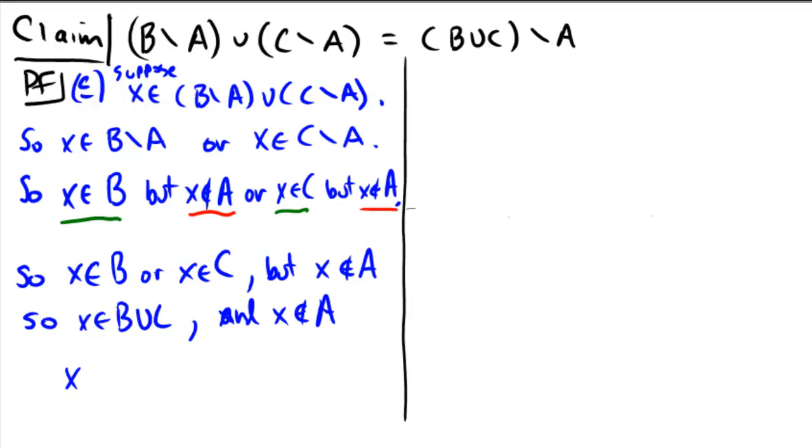So therefore, x is in b union c, difference a, just as we need it. And that completes the left hand containment from the left to the right.